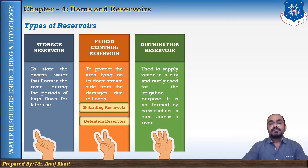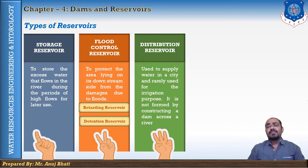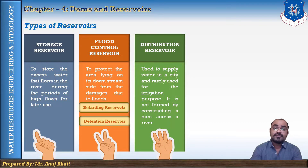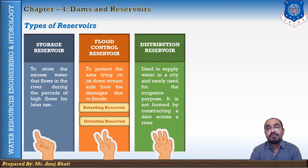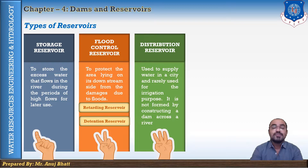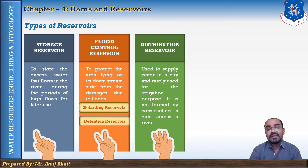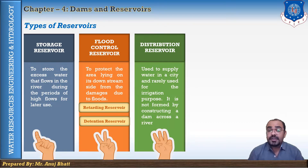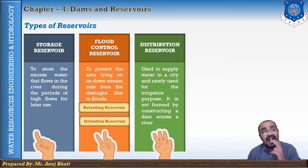The third type is the distribution reservoir. A distribution reservoir is a small storage reservoir used for water supply in cities. It accounts for the varying rate of water demand during the day. Water is continuously pumped into the reservoir at a constant rate and supplied to consumers from the reservoir. It permits pumps to work at a uniform rate and stores water during periods of lean demand while supplying additional water during periods of high demand.